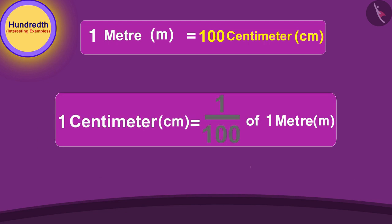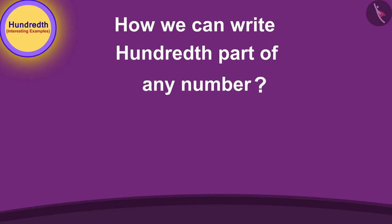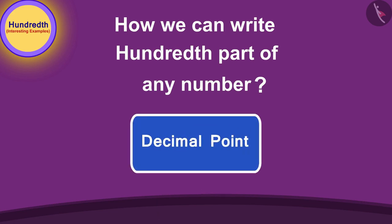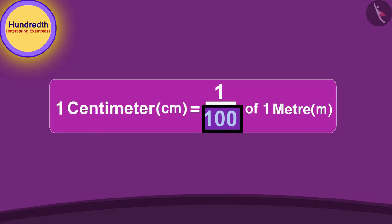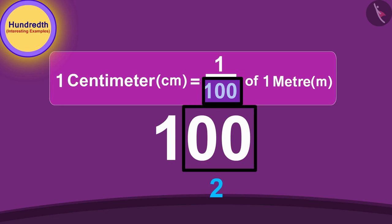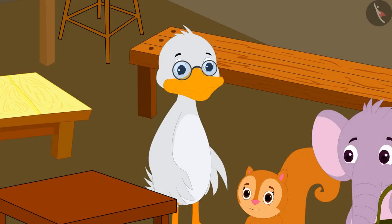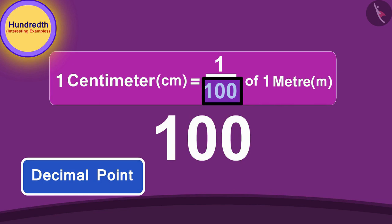Uncle said, 'Dear, I will explain to you. Tell me, how many centimeters is one meter?' Chanda answered, 'Hundred centimeters!' 'Exactly! That means one centimeter is one hundredth part of a meter. Let me show you how we can write the hundredth part of any number using a decimal point. How many zeros are there in a hundred?' Chanda answered, 'Two zeros!'